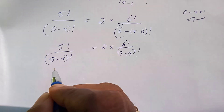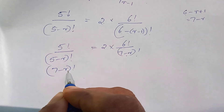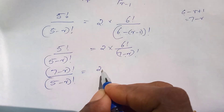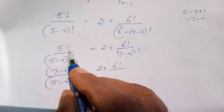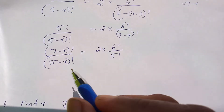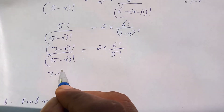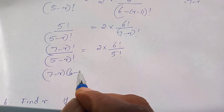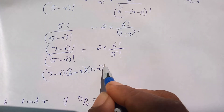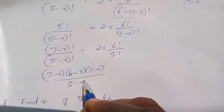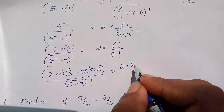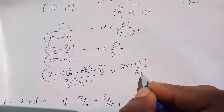Expanding: 2 into 6 factorial by (7 minus r) factorial. Then simplifying (7 minus r) factorial by (5 minus r) factorial, multiplied by 2 times 6 factorial over 5 factorial.